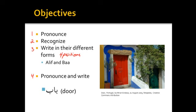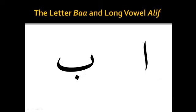Now let's look at the pronunciation of alif and ba. Here we have alif and ba, and we'll begin with the alif — that's the first letter of the Arabic alphabet. The alif here is what we call a long vowel, and this has an ah sound. We're going to characterize that with an a with a line over it, so this is the sound that it makes — it's an ah sound.